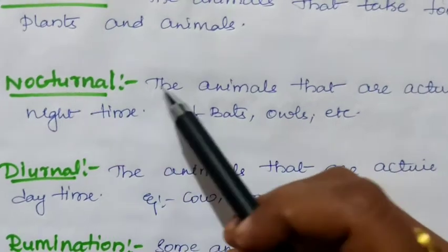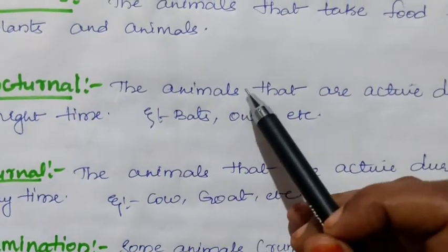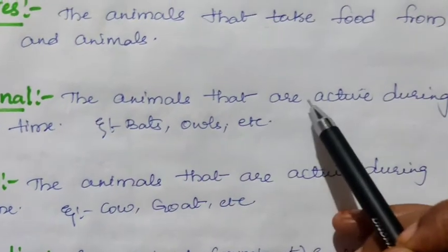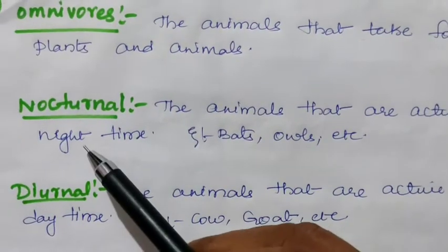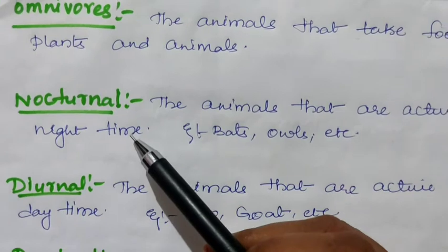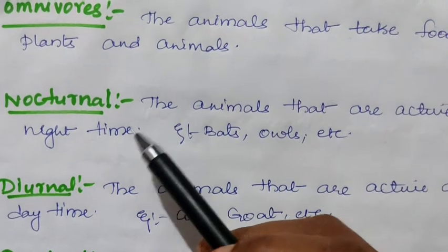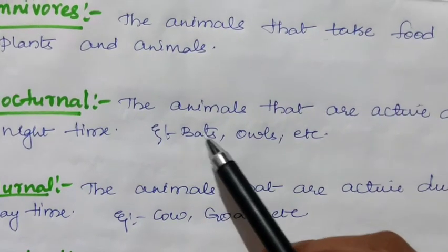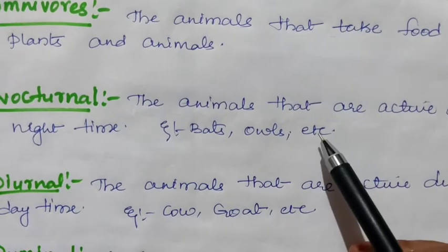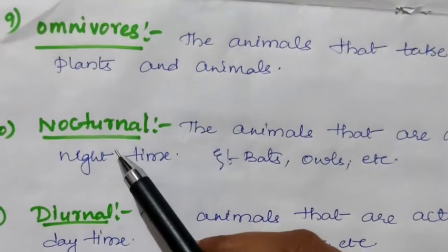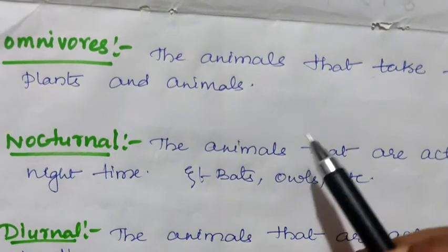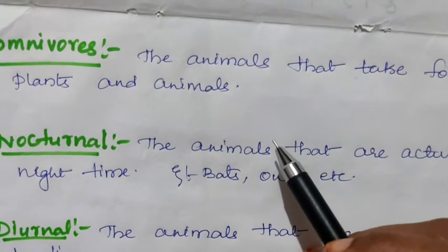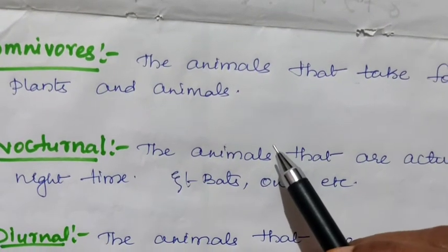Nocturnal: nocturnal means the animals that are active during the night time. Examples of nocturnal animals include bats and owls.